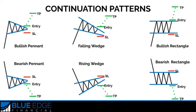To trade continuation patterns, we just place an order above or below it in the same direction as the trend. Then we place our take profit line at about the same distance as the height of the pattern for the wedges and rectangles. And for pennants, we can usually catch a little bit more profit. Then to mitigate our risk, we put our stop loss above or below the chart formation.